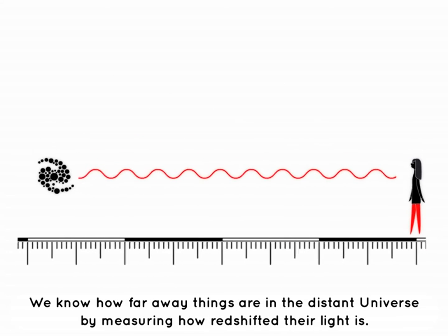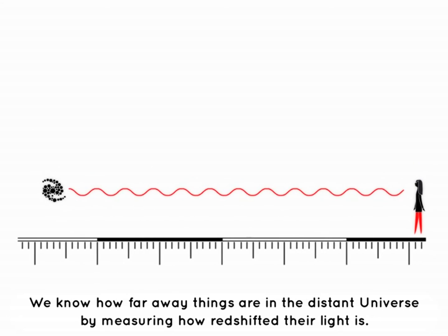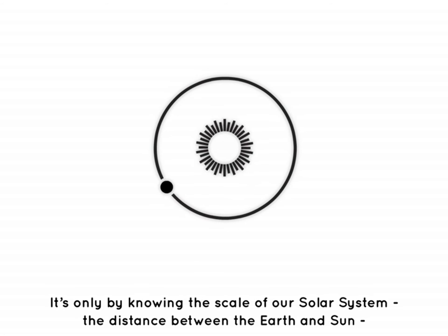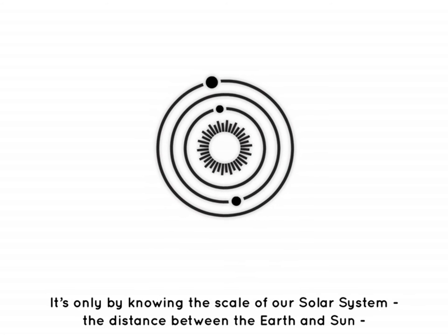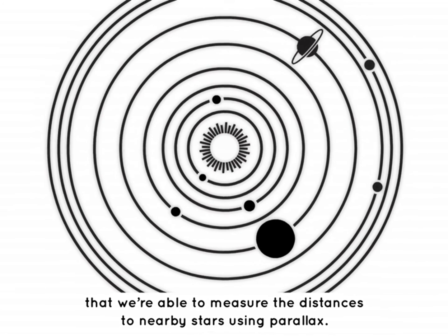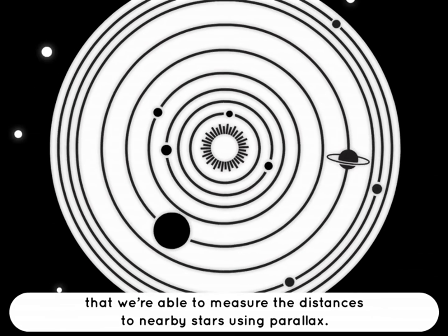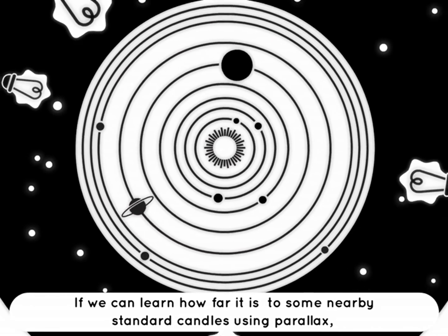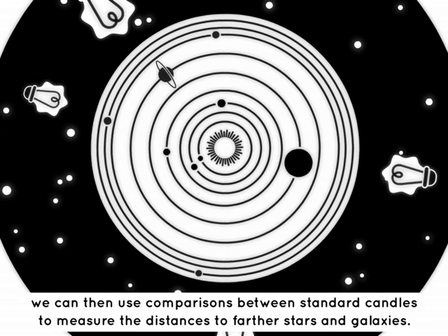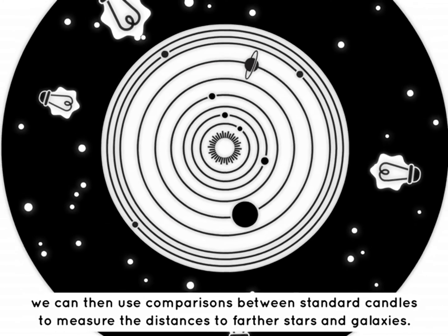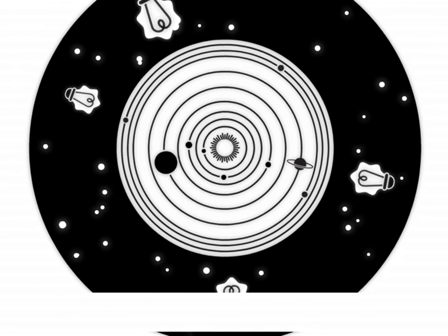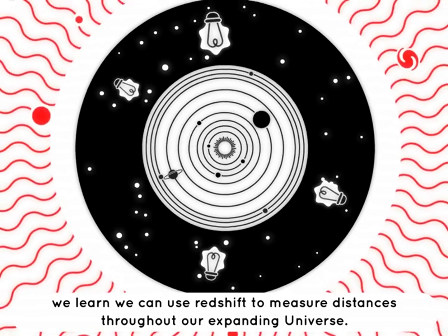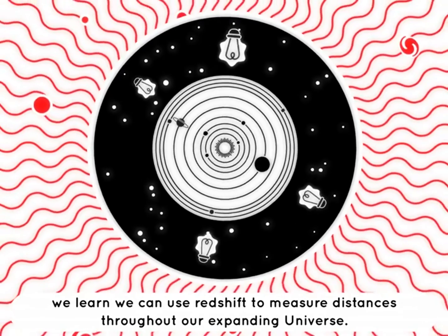We know how far away things are in the distant universe by measuring how redshifted their light is. What is most incredible is how all these measurements build on each other. It is only by knowing the scale of our solar system — the distance between the Earth and the Sun — that we are able to measure the distances to nearby stars using parallax. If we can learn how far it is to some nearby standard candles using parallax, we can then use comparison between standard candles to measure the distances to farther stars and galaxies. Finally, by studying the motions of galaxies with standard candles, we learn we can use redshift to measure distances throughout our expanding universe.